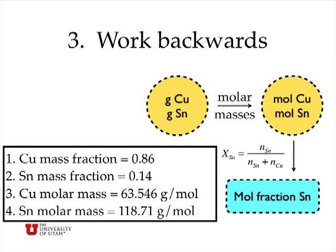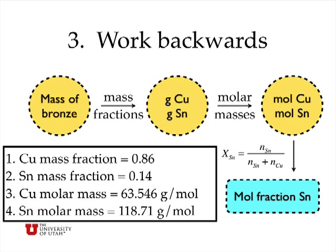Now, I can work back from the number of grams of copper and the number of grams of tin, and I know that I can convert that to moles using molar masses. In order to calculate the number of moles of something, I take the number of grams and divide by the number of grams per mole, the molar mass, to get the number of moles. And so as I work back further, I can calculate the number of grams of copper and tin if I know the mass fraction of copper and tin, if I know the mass of bronze. But I wasn't actually given the mass of bronze.